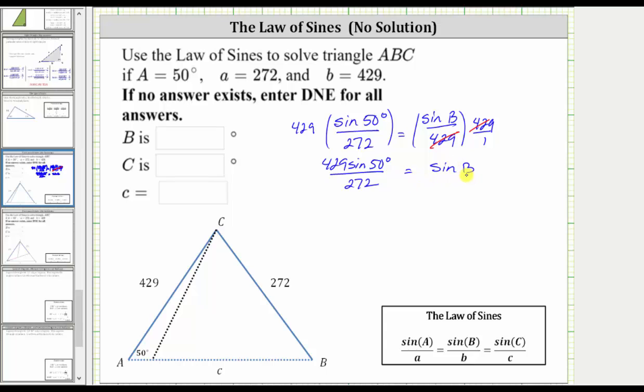Now we need to solve this equation for B. To undo the sine function, we take the inverse sine of both sides of the equation, which gives us inverse sine of this quotient equals inverse sine of sine B. But inverse sine of sine B simplifies perfectly to B, giving us B equals inverse sine of this quotient.